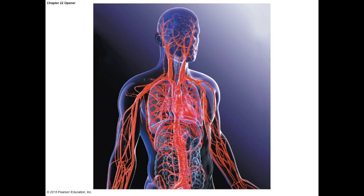Here we're going to talk about circulatory routes as blood vessels enter a tissue and leave that tissue, and the basic fundamental function of these blood vessels. Generally, these vessels are delivering oxygen and nutrients to tissues and removing carbon dioxide and metabolic waste.